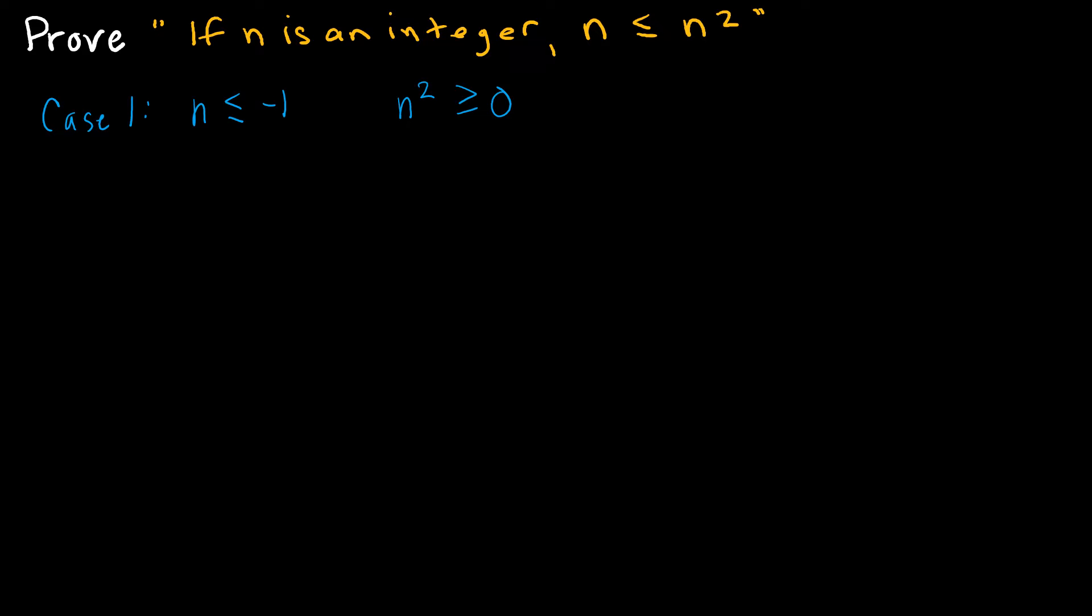So if I take negative 1 and square it, I get positive 1. Negative 4 and square it, positive 16. So I know that n squared will always be greater than or equal to 0. So it follows that n is less than or equal to n squared because n is a negative value and n squared is greater than or equal to 0. So case one is satisfied.